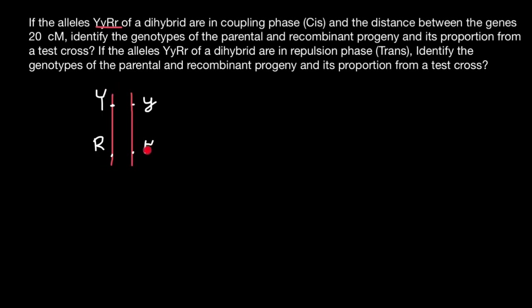Why do we call this genotype dihybrid? Because the person who has chromosome one inherited from, say, the father and another from the mother would be hybrid for gene Y and hybrid for gene R — so dihybrid. And here is the genotype.